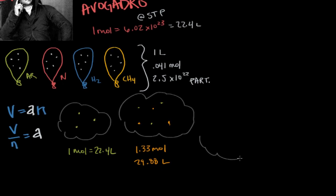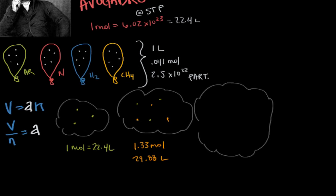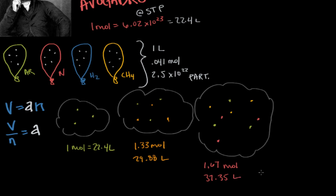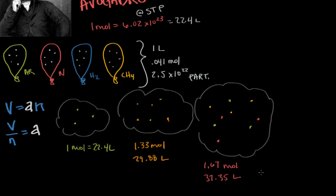If we were to blow even more air into this system, we would increase the volume even more. Another third of a mole of air would bring our volume up to 37.35 liters. Our volume has expanded proportionally to the amount of air that we've increased in this system.